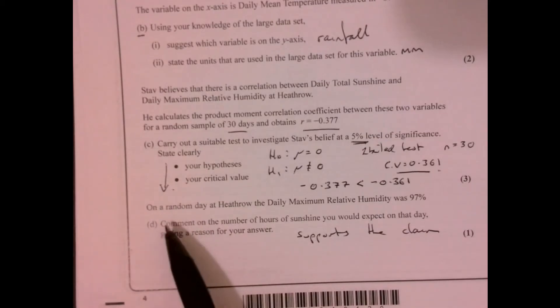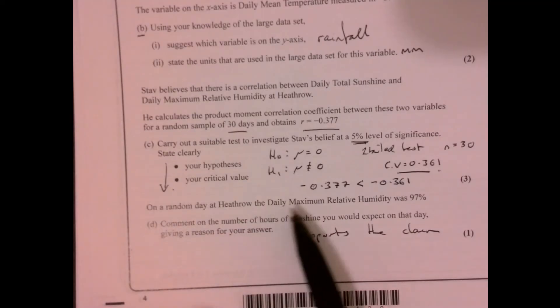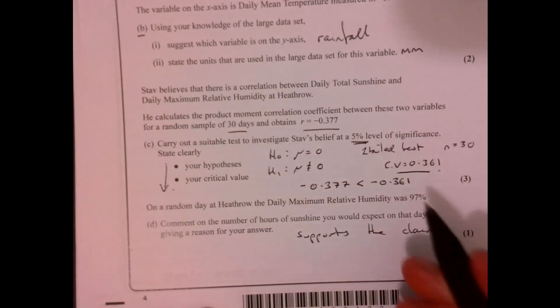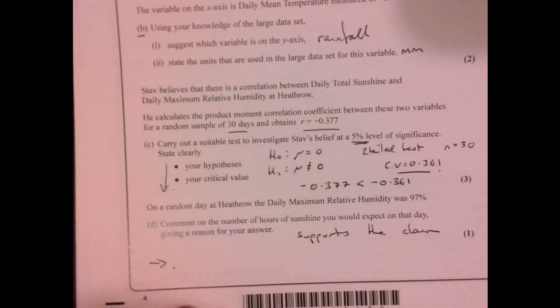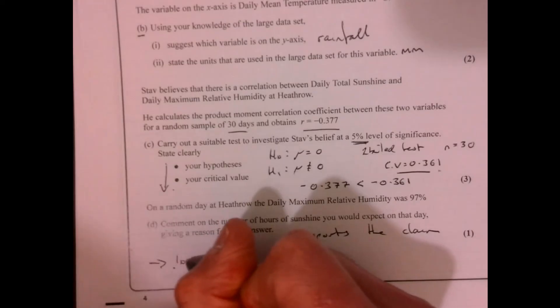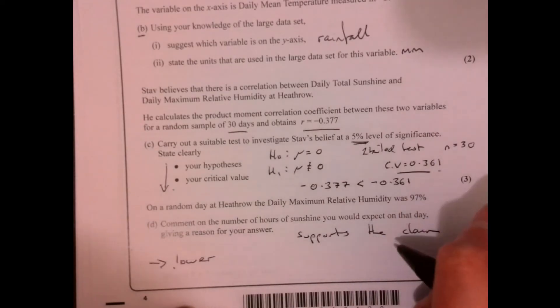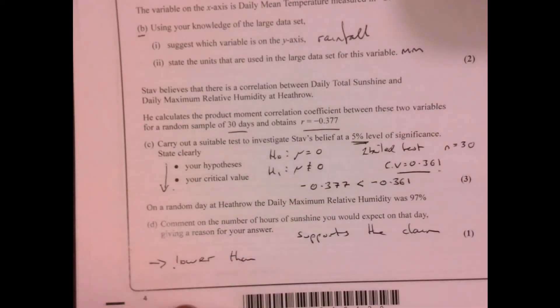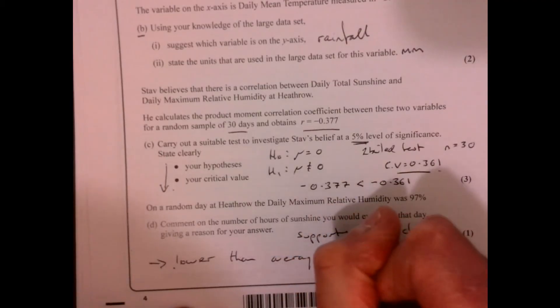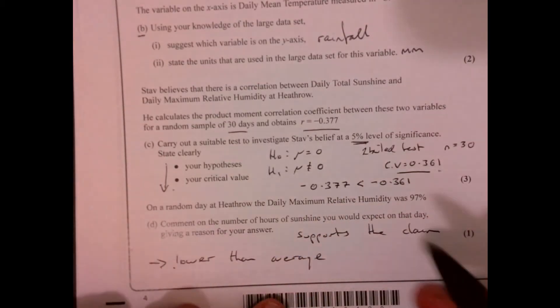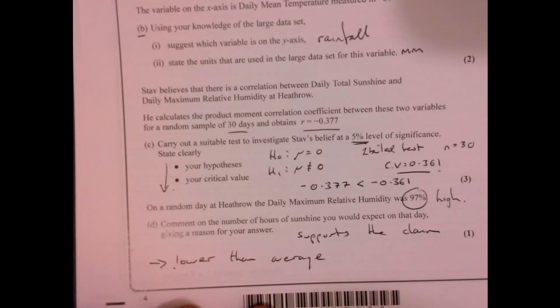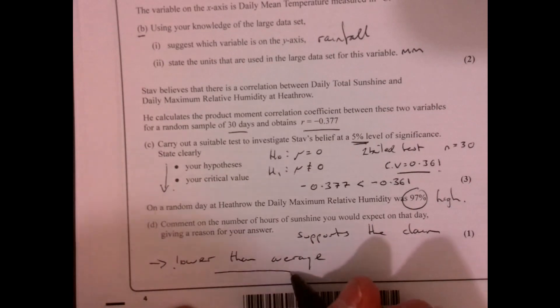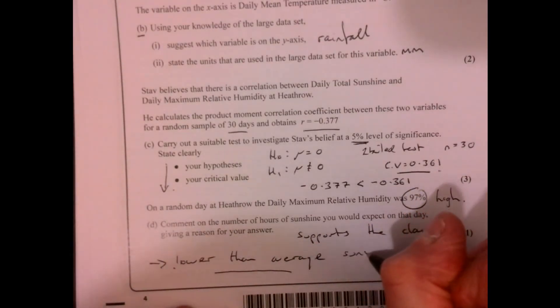The last part of the question says on a random day at Heathrow, the daily maximum relative humidity is 97%. Comment on the number of hours of sunshine you'd expect. What we'd expect is because it's a negative correlation, it's going to be lower than average. Humidity is obviously high, and we've got a negative correlation, so therefore we should be getting lower than average sunshine.